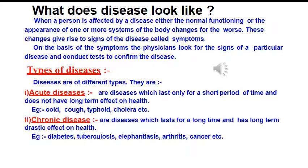If I talk about acute diseases, you may not go to school for a few days, but a chronic disease will make it difficult to follow what is being taught in school and will reduce your ability to learn. In other words, we are likely to have prolonged general poor health with a chronic disease. Chronic diseases therefore have very drastic long-term effects on people's health as compared to acute diseases.